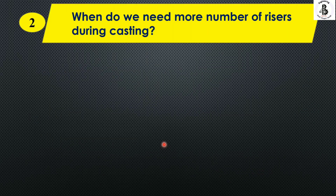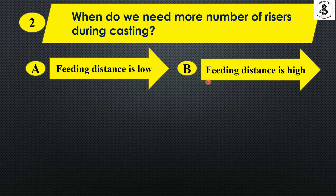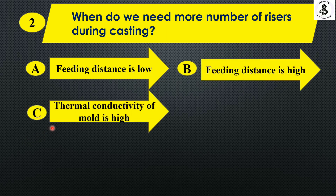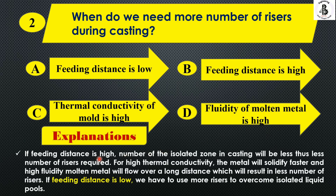The next question: when do we need more number of risers during casting? Option A: feeding distance is low. Option B: feeding distance is high. Option C: thermal conductivity of mold is high. And Option D: fluidity of molten metal is high.